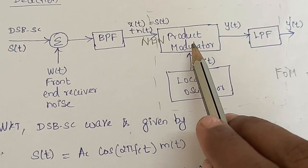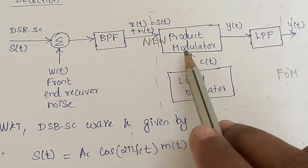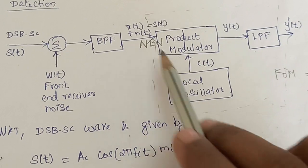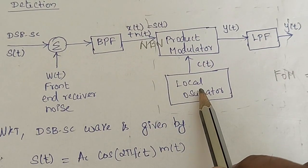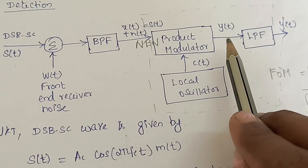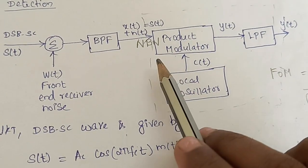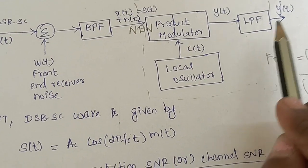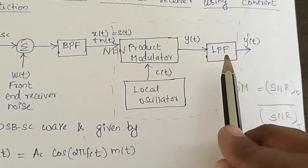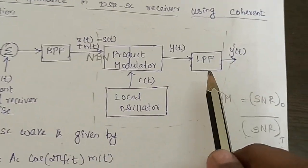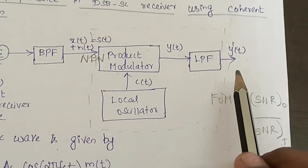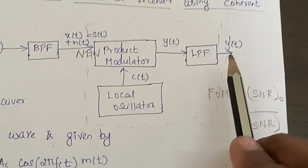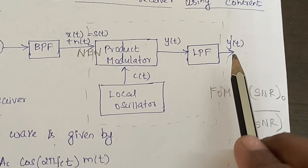The local oscillator generates the carrier C of T. A product modulator multiplies the two inputs applied to it. At the output Y of T, we get the product of these two signals. Then it is passed through a low pass filter, whose output is the final output of the receiver, represented as Y dash of T.